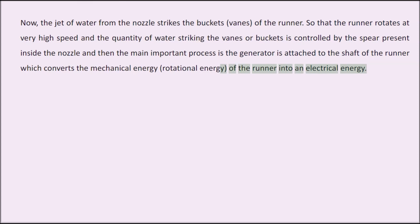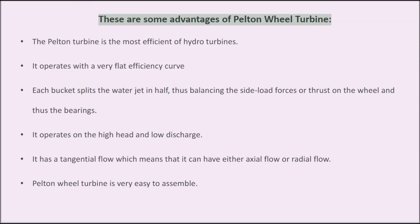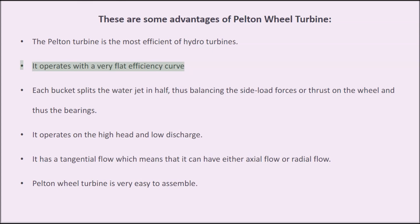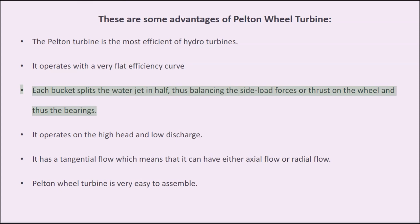Advantages of the Pelton wheel turbine: The Pelton turbine is the most efficient of hydro turbines and operates with a very flat efficiency curve. Each bucket splits the water jet in half, thus balancing the side load forces or thrust on the wheel and its bearings. It operates on high head and low discharge.